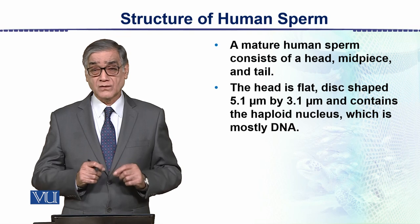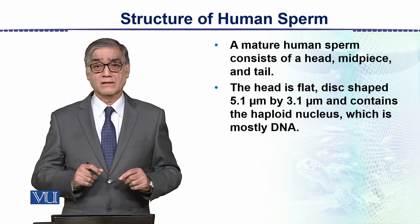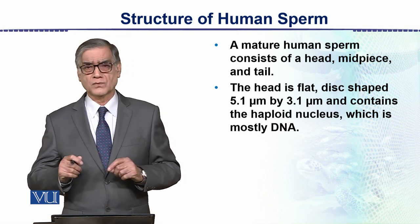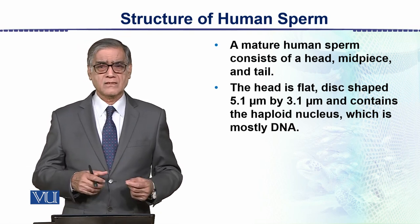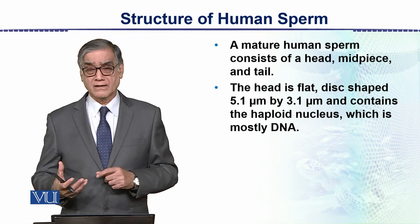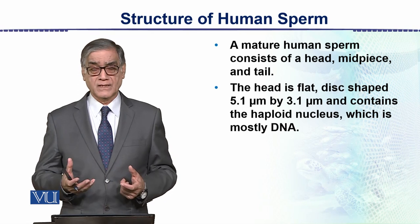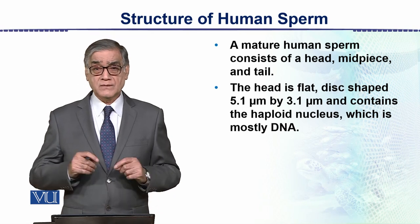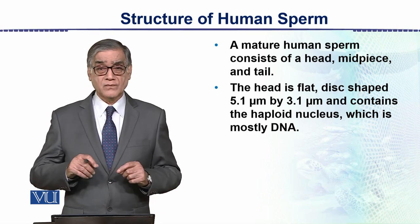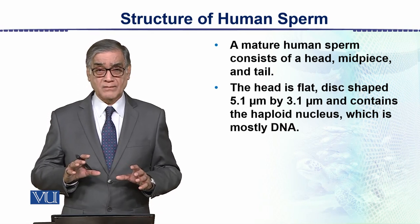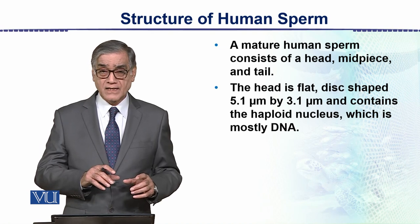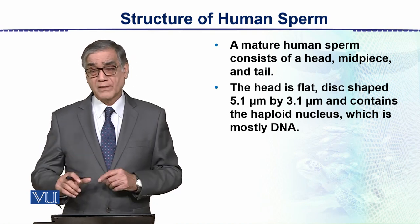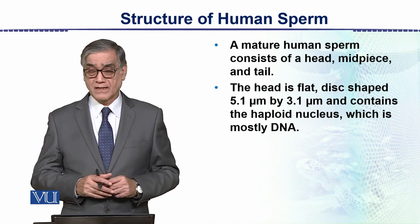There are 23 chromosomes: 22 autosomes, and then there is either an X or Y chromosome. This means there are X-bearing sperm and Y-bearing sperm — they are separate.